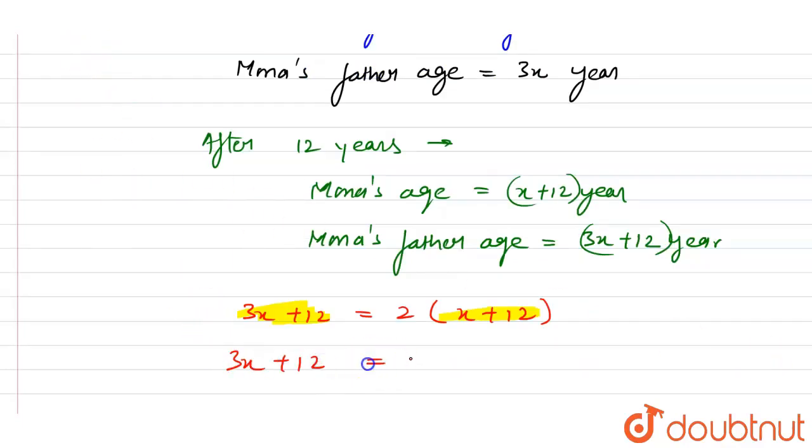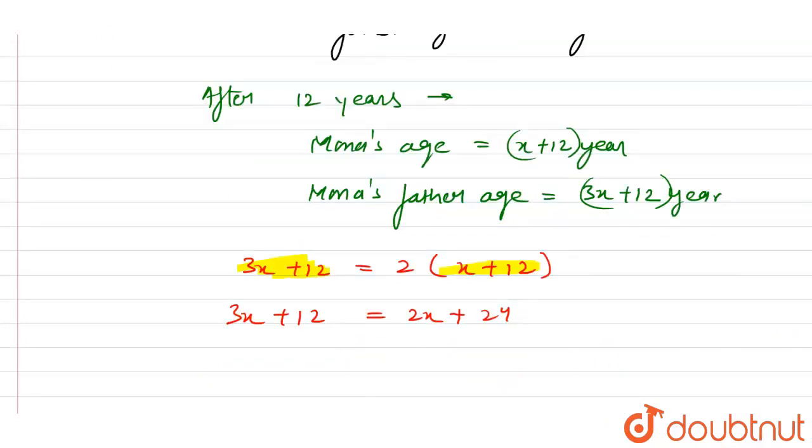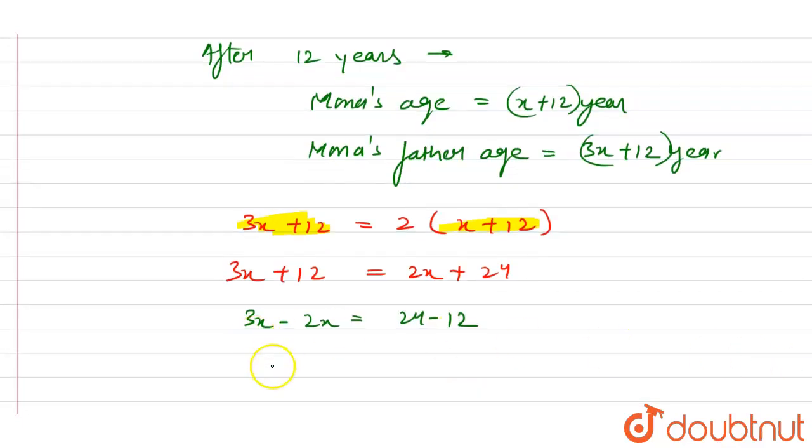3x plus 12 equals 2 times (x plus 12), which is 2x plus 24. Now here we make the coefficient of x on one side and constant on one side. So 3x minus 2x equals 24 minus 12. Now 3x minus 2x is x, and 24 minus 12 is 12.